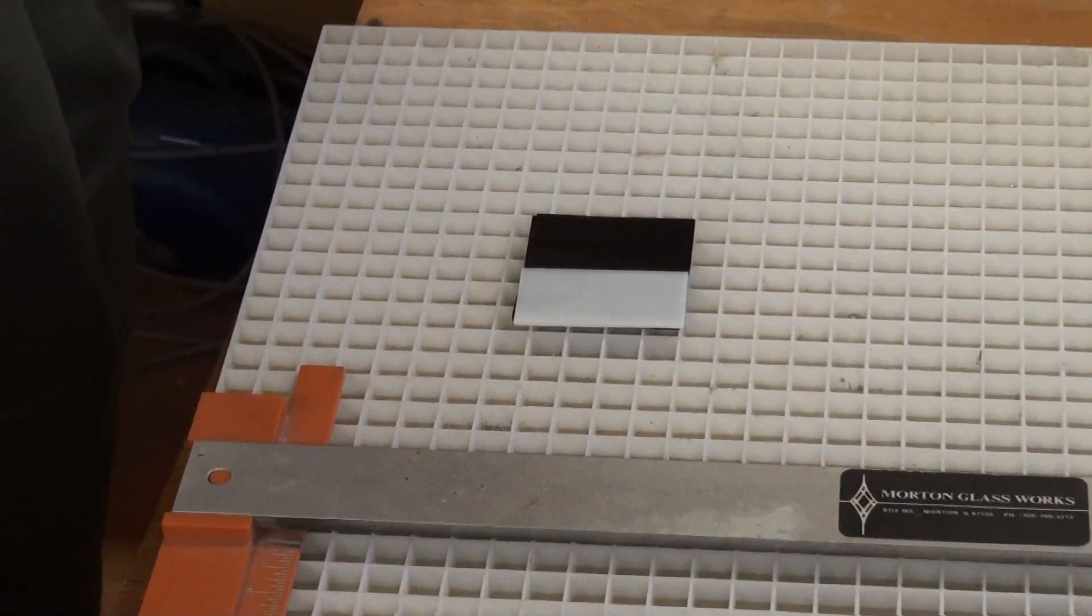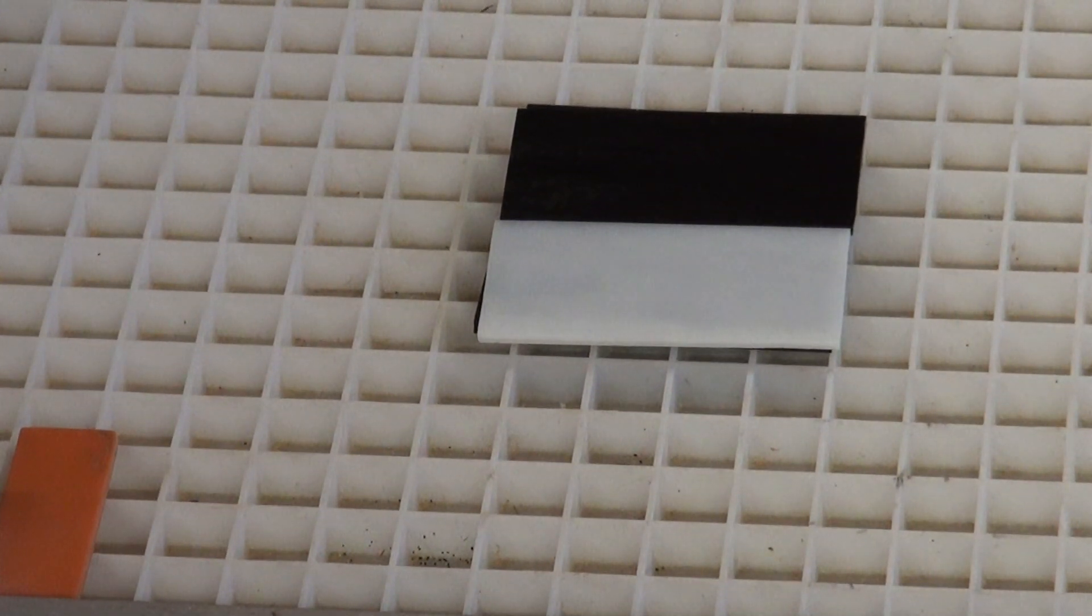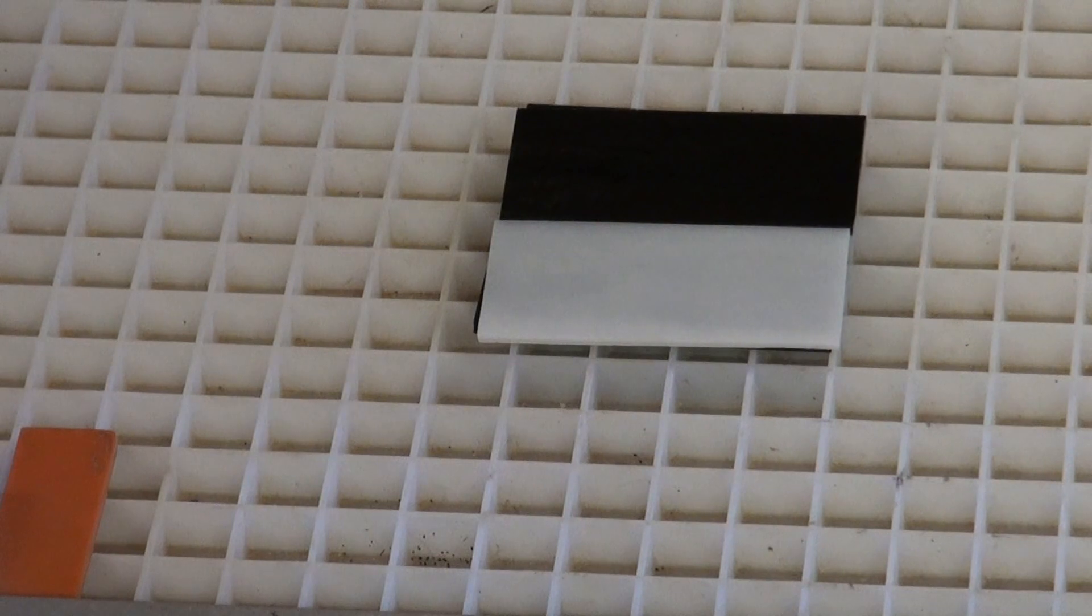The reason for having the thicker black glass underneath is that it'll get us closer to a quarter inch thickness, and therefore we hope that we won't have too much movement of the glass because it's trying to change dimensions. And so our next step is to put it into a kiln and fire it.